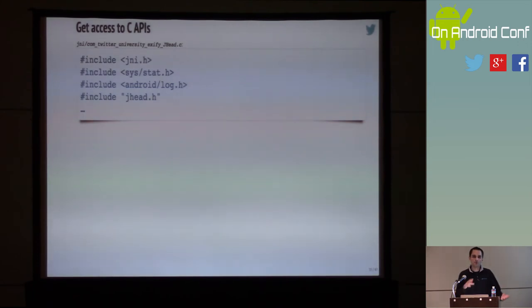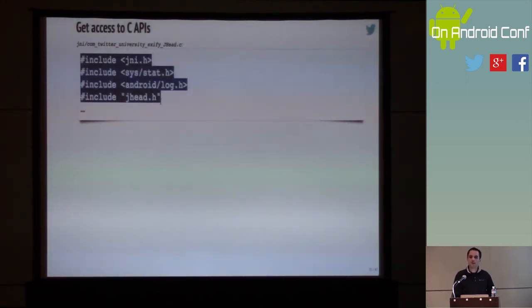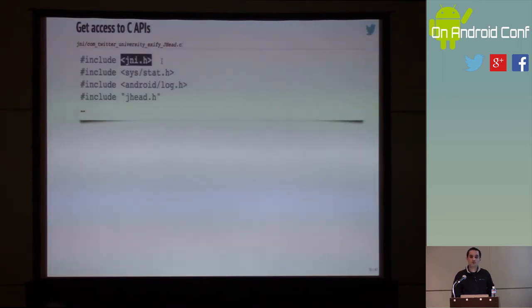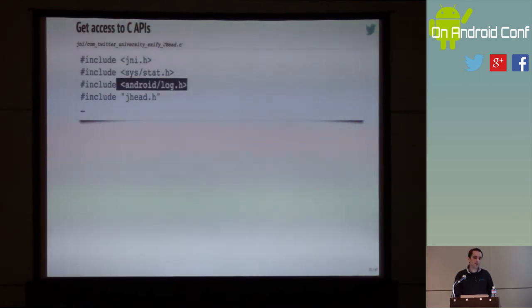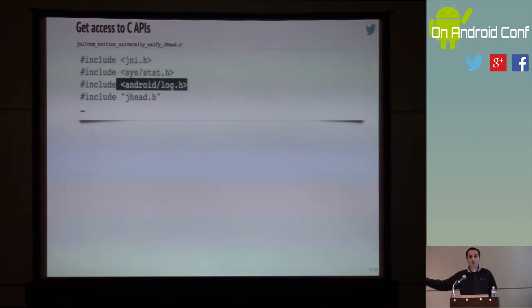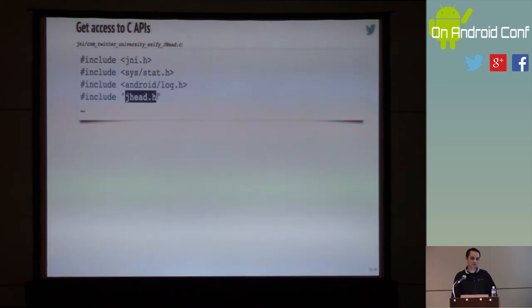Let me walk into the example implementation. This is one long file broken down into sections. First, you have to include your APIs — you generally start with jni.h, which defines the functions enabling you to map the two language environments. Then the system functions you need, like stat for files. Then NDK APIs, in this case a logging function from android/log.h that enables us to log to ADB logcat. And finally the header of the library we're actually wrapping.